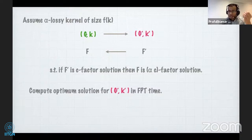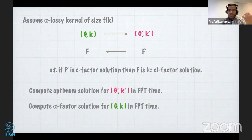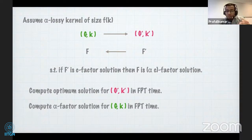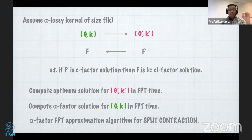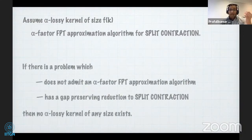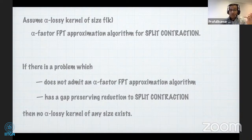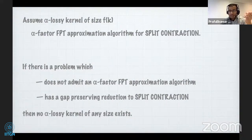Since it's an alpha lossy kernel of size f(k), we can afford a brute force on (G', k'). We compute an optimum solution for (G', k') — since it's an optimum, c equals one — getting an alpha-factor solution for (G, k) in FPT time. So an alpha-factor FPT approximation for split contraction would exist. If there is a problem that does not admit an alpha-factor FPT approximation, and we can produce a gap-preserving reduction from that problem to split contraction, we can rule out an alpha lossy kernel.